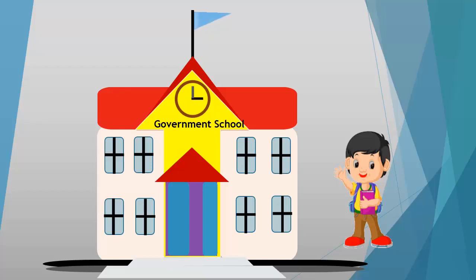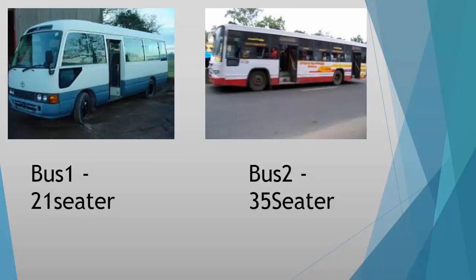A school has planned a field trip for 6th standard students to visit a geological park. The strength of the students with staff is 105. The bus company has two types of seat capacities: 21-seater and 35-seater. Now, how many buses are required for the trip?